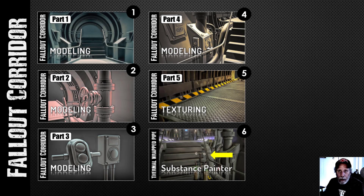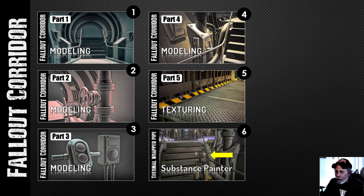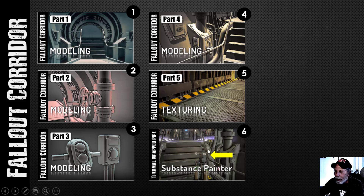This is the final video in the Fallout Corridor series. I started out inspired by the Fallout games, in particular Fallout 4, and then had some influence from the Alien Isolation game and the Aliens movies. So this is sort of a mashup of all of that. I've done six videos in the series. This last one was a separate tip on how to create a thermal wrapped pipe.